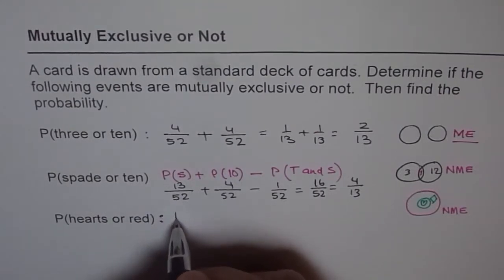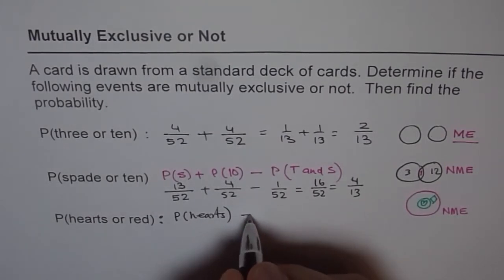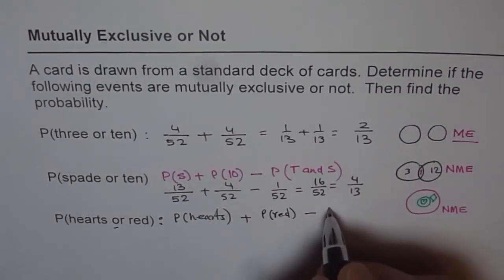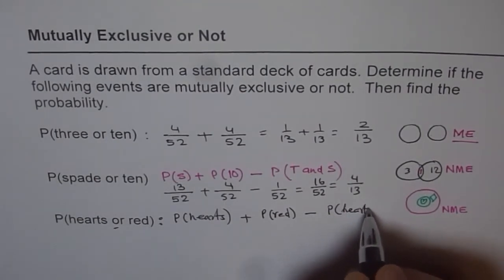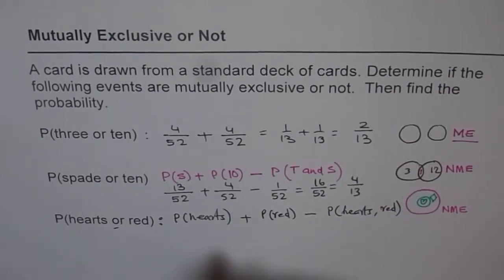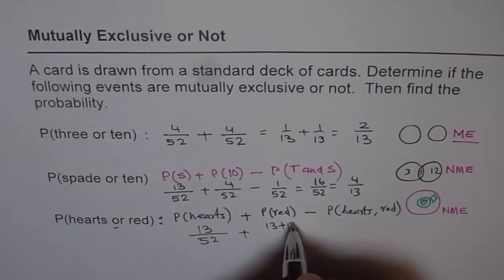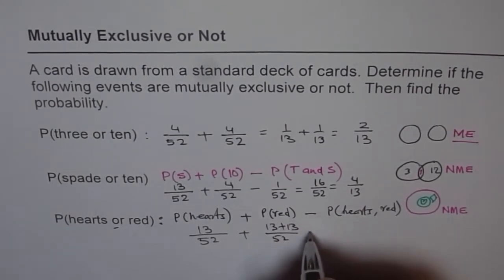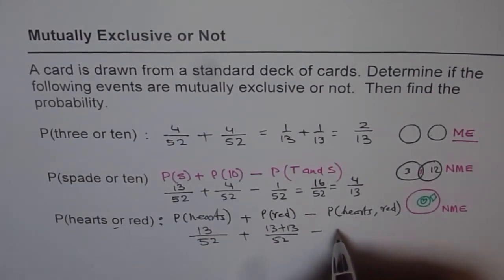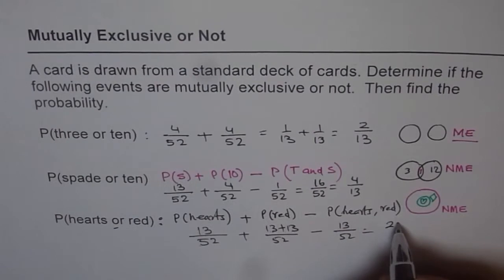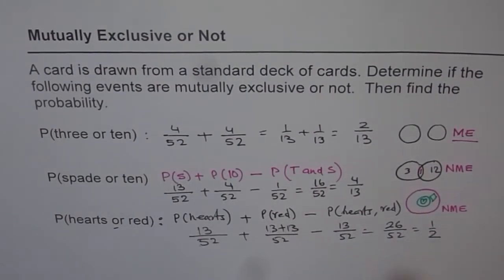So the probability is: probability of getting hearts plus probability of getting red cards, minus probability of getting both hearts and red. Probability of hearts is 13 over 52. Red cards are 13 hearts plus 13 diamonds, so 26 over 52. Minus 13 over 52, since all hearts are red cards. That gives 13 plus 26 minus 13 equals 26 over 52, which is one half. So probability of getting hearts or red cards is 50%.